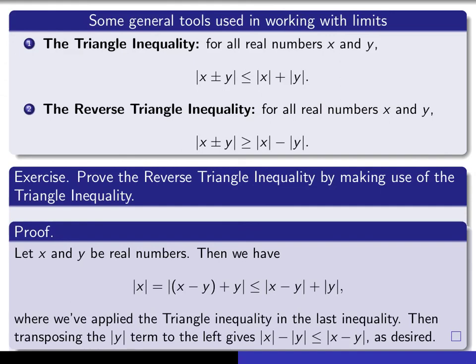Here's my solution. It's a universally quantified statement, so you begin by saying: let x and y be real numbers. Since it's not a conditional statement, there isn't anything left to do but just prove that it's true. I start with absolute x, add and subtract y, apply the triangle inequality — noting where it's applied — and then transposing the y term to the left gives exactly what it was that you wanted to prove. In the next video we're going to do some exercises that make use of both the triangle inequality and the reverse triangle inequality.